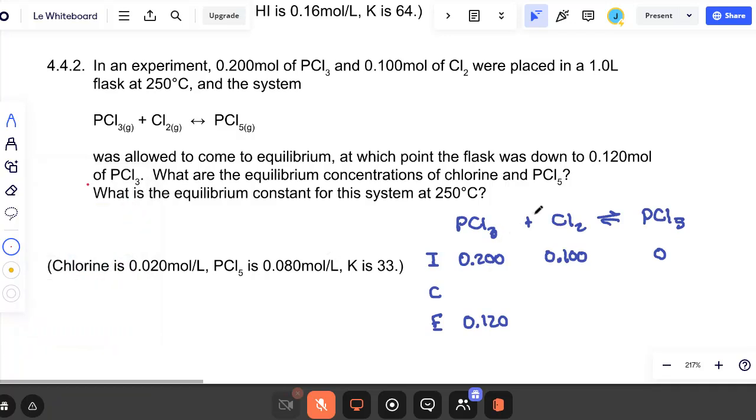Okay, where do you think we start? We want a number in the change row, and we can't find one for PCl5 or chlorine, but we can for this because we know the initial and equilibrium. 0.200 minus 0.120 gives 0.080. These are 1 to 1, so 0.080 again. And actually, they're all 1 to 1, so 0.080 one more time.